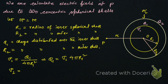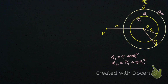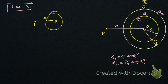Similarly, the surface charge density of the outer shell σ₂ equals q₂ divided by 4πr₂², and hence q₂ = σ₂ × 4πr₂². Now, in lecture three — the link is given in the description box — we established that the electric field at a point P at distance small r from the center of a spherical shell of radius R carrying charge q is E = q / (4πε₀r²).